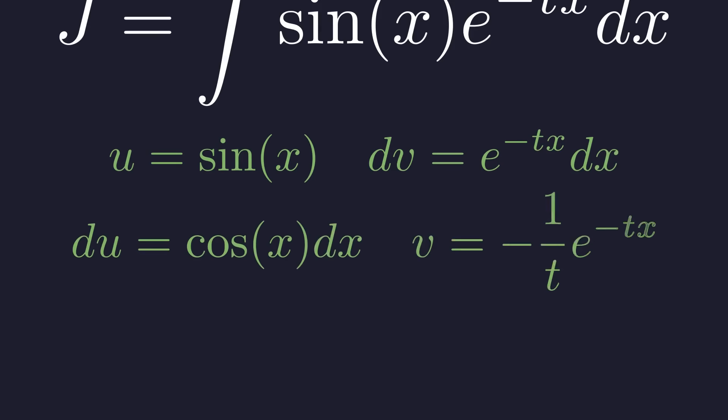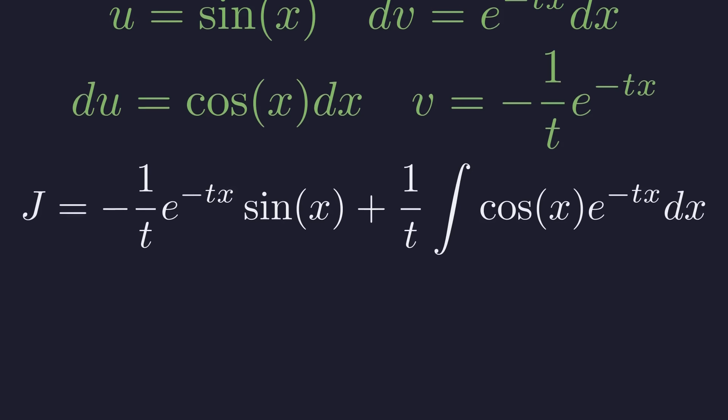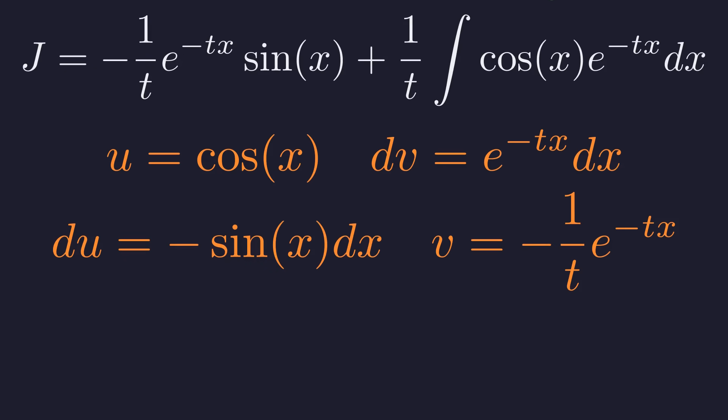For the first round of integration by parts, let's choose u to be sine of x and dv to be e to the power of negative t times x dx. Applying the formula u times v minus the integral of v du, we get this expression. Simplifying a bit, we now have a new integral to solve. We apply integration by parts again.